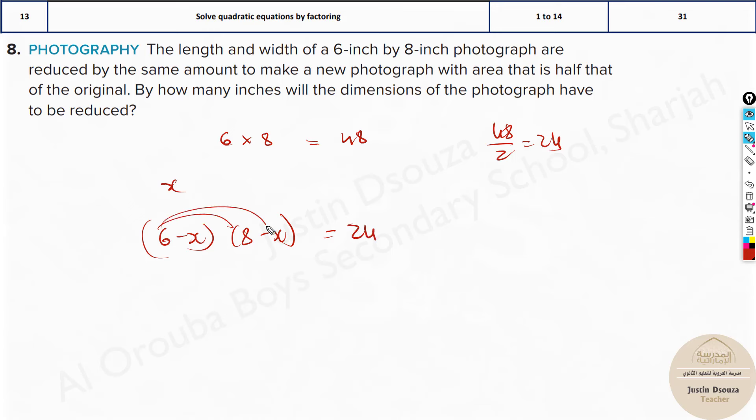Now we can easily solve it using distributive property. 8 times 6 is 48 minus 6x minus 8x plus x squared. Why? Because negative times negative becomes positive. x and x becomes x squared.